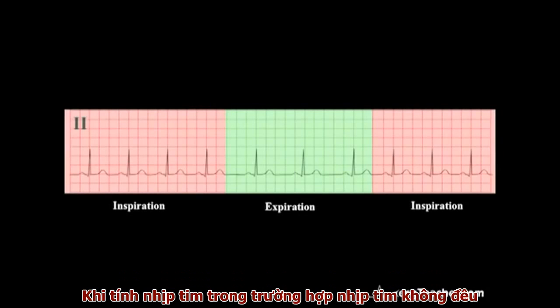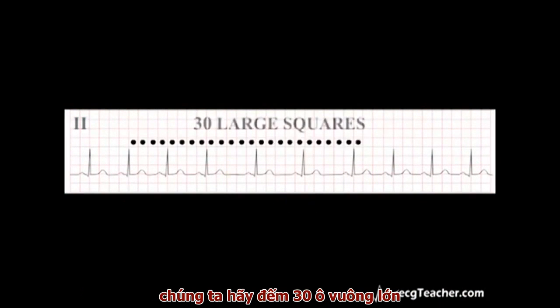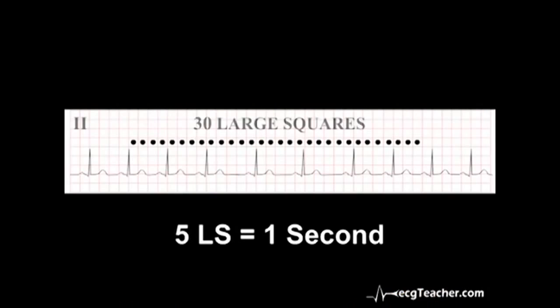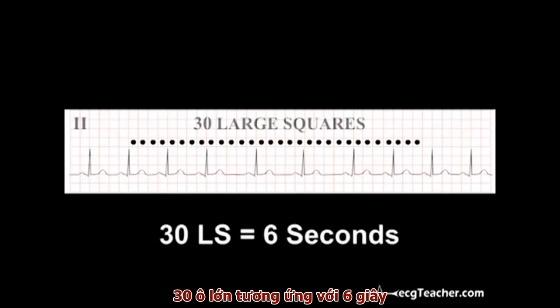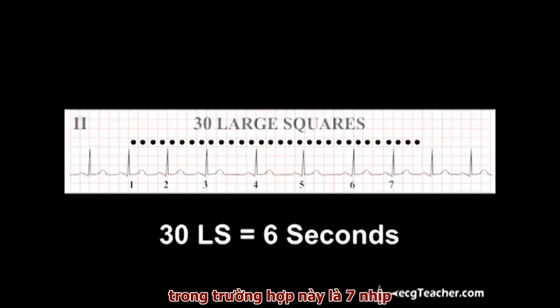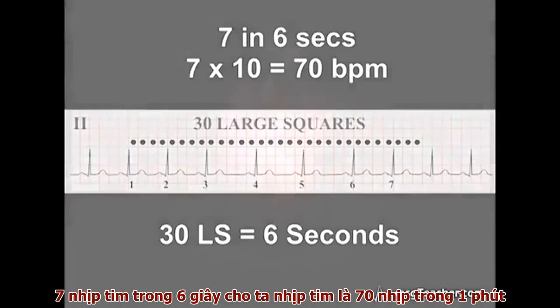When calculating the heart rate from an ECG in the presence of an irregular rhythm, count out 30 large squares. Remembering that 5 large squares equates to 1 second, 30 large squares corresponds to 6 seconds. Count the number of R waves in these 30 squares. In this case there are 7. 7 beats in 6 seconds gives a heart rate of 70 beats per minute.